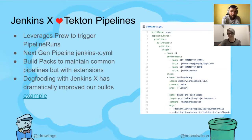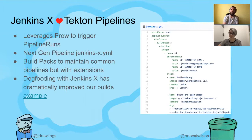Jenkins X also uses another open source project from the Kubernetes ecosystem called Prow. Prow handles webhook events from Git providers and then creates the CRDs that Tekton uses. It can also update pull requests and enable chat-ops communication on pull requests to trigger different behaviors and builds. It really works well with Tekton.